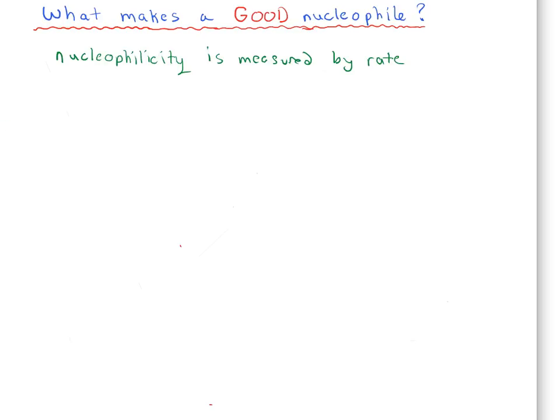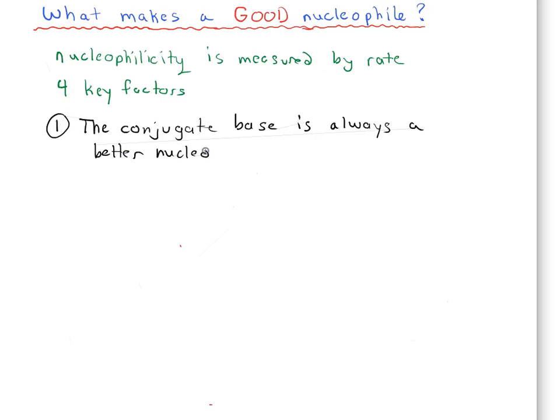There's four key factors when it comes to understanding nucleophilicity, and this video will at least try to discuss the first two. And the first important factor is this: the conjugate base is always a better nucleophile. So the conjugate base is when you remove a proton from your acid.